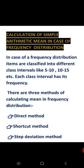Now, calculation of simple arithmetic mean in case of frequency distribution. In frequency distribution, the series has class intervals such as 0 to 5, 5 to 10, 10 to 15. There are also three methods to calculate it: direct method, shortcut method, and step deviation method. The shortcut and step deviation methods of discrete series and frequency distribution are exactly the same. But there is a difference in the direct method: for discrete series it is sigma fx upon sigma f, whereas for frequency distribution the formula is sigma fm upon sigma f.